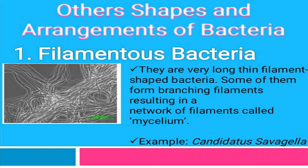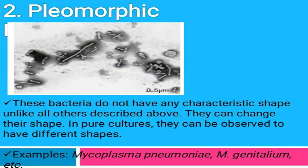There are also some other shapes and arrangements of bacteria. First is filamentous bacteria — these are long, thin filaments that form branching filaments and a network called mycelium, as seen in the image. The example is Candidatus savagella. The second is pleomorphic bacteria — these do not have any characteristic shape, can be in any shape, and change their shape. In pure culture, these different shapes can be observed. The example is Mycoplasma pneumoniae.